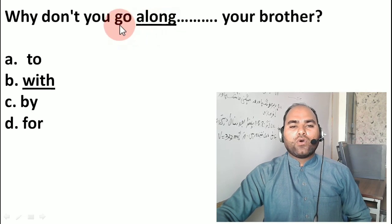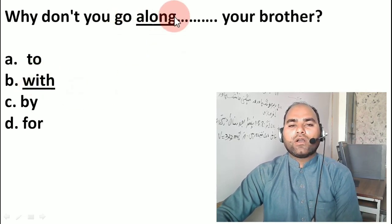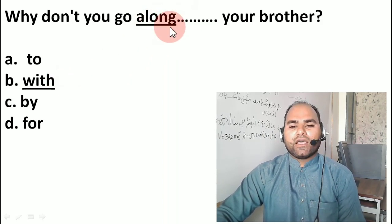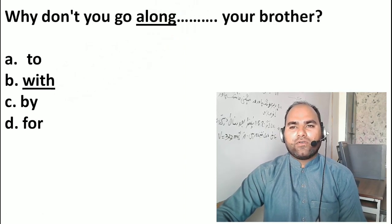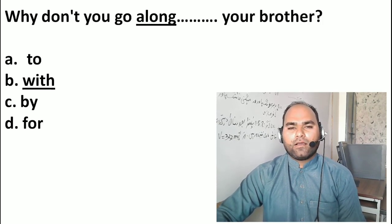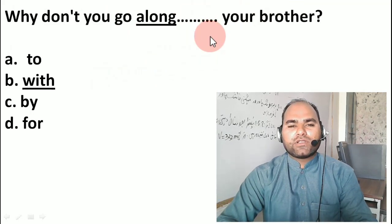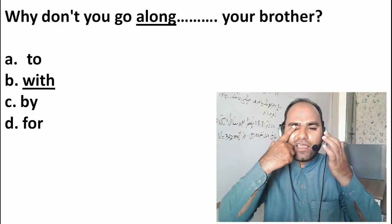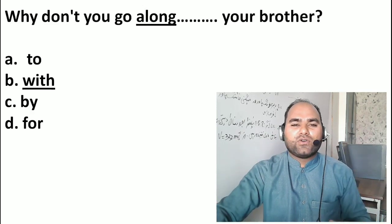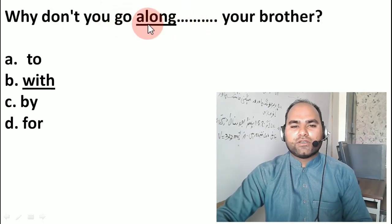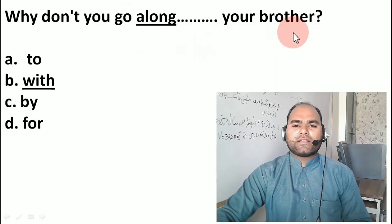Next: 'Why don't you go along with your brother?' Remember that 'along' is always followed by 'with' — along with. 'Along with' is also a compound preposition, and to complete a compound preposition you must use its second part. Just as a door has two hinges, 'along' needs 'with'. So the answer is: 'along with your brother' — why don't you go along with your brother?